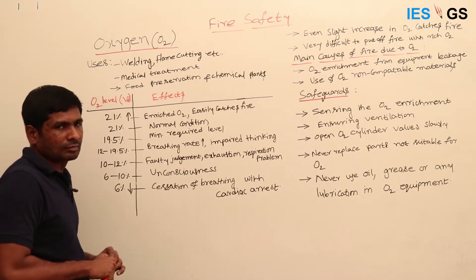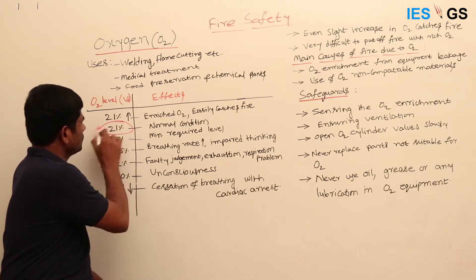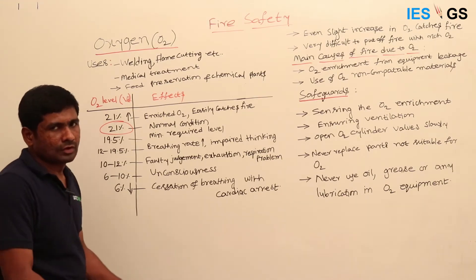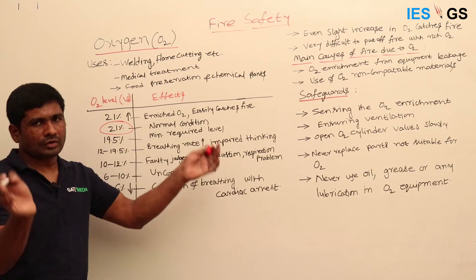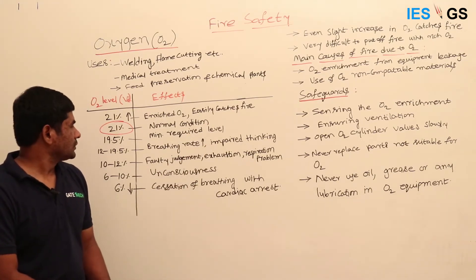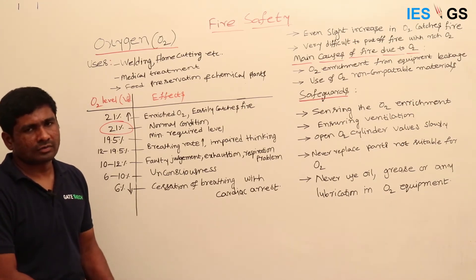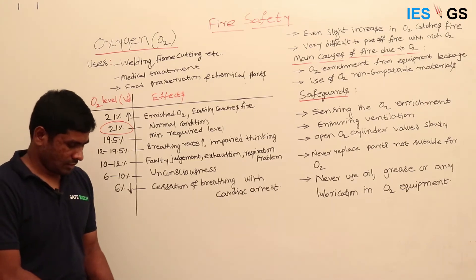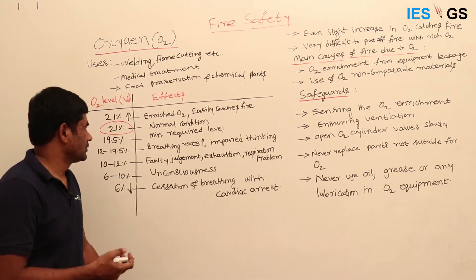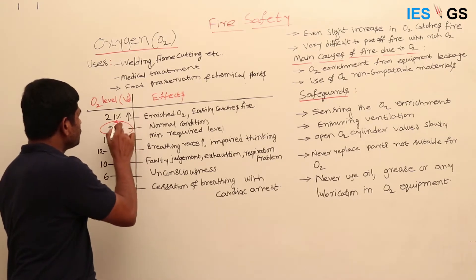We will see the effect of different oxygen levels in the atmosphere. The normal level of oxygen in the atmosphere is 21% by volume. If you consider the entire atmosphere as 100 parts by volume, then 21% is oxygen, and a majority — over 70% — is nitrogen, with some other gases making up the remainder.